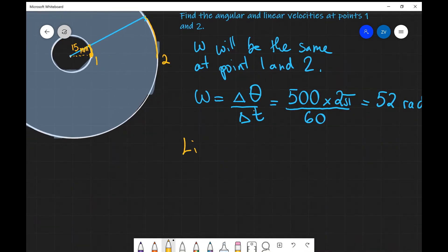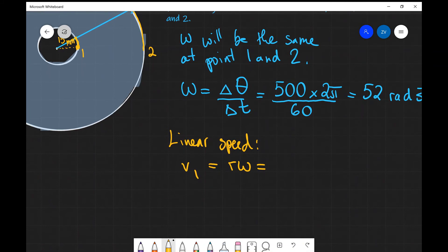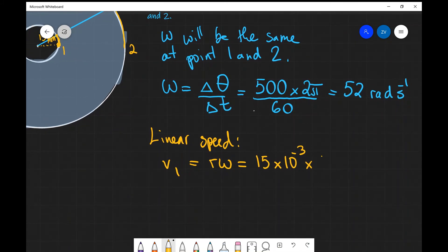So let's say linear speed. And let's say that point 1, we're going to call that V1. This is going to be equal to R omega, which will be, in this case, R is 15 millimeters. So it's going to be 15 milli stands for 10 to the power of minus 3 multiplied by omega, which is 52 radians per second.